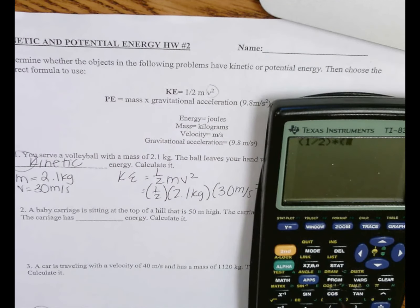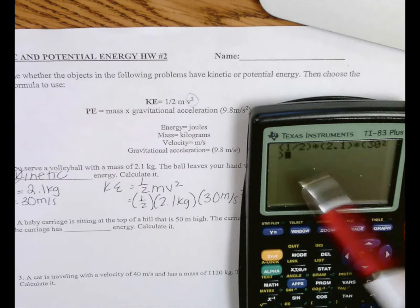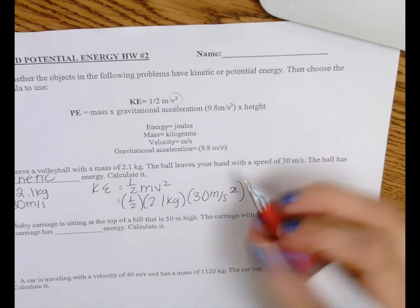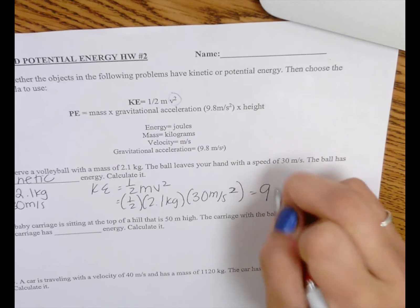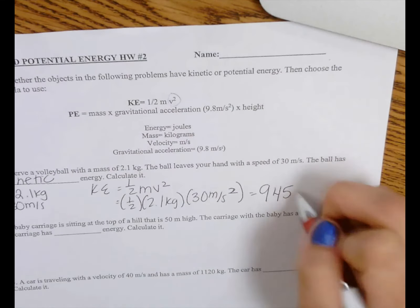One half times the mass, which is 2.1, times 30 squared. Remember, you are only squaring just that velocity. You're not squaring this entire problem. So you get 945.